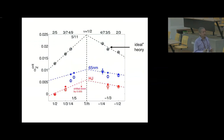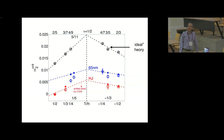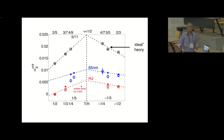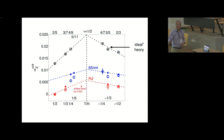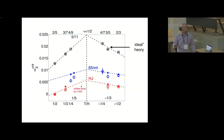Let me finish quickly and show the main results. This is a comparison between experiments and theory. The ideal theory is shown, and the circles are what we get theoretically after including effects of Landau level mixing and finite width. We have taken two different samples: one is a 65 nanometer wide sample, one is a heterojunction. The agreement is extremely good in cases where the circles and stars lie on top of each other. For the 65 nanometer sample the agreement is reasonably good.